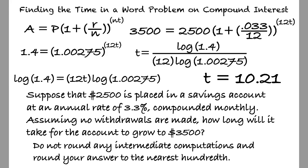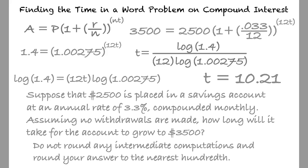We start by determining the values for each variable in the compound interest formula, and then substitute each variable into the equation. Next, we simplify the equation and take the common logarithm of both sides, using the logarithm of a power property to isolate t, and then input the equation into the calculator to solve for our final answer. That's right.